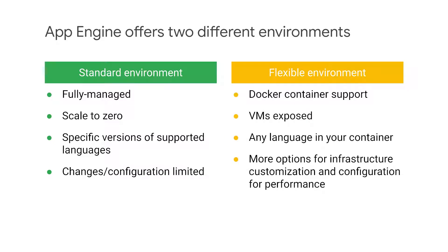App Engine Flexible runs your application in a Docker container environment. You can use any HTTP-based runtime. The virtual machines are exposed, allowing you to log into them and write to persistent disks. However, the system will not scale to zero, so you'll still pay for the service even if users aren't using your application. Because VM instances in the flexible environment are Compute Engine virtual machines, there are far more options for infrastructure customization, and you're able to take advantage of a wide array of CPU and memory configurations.